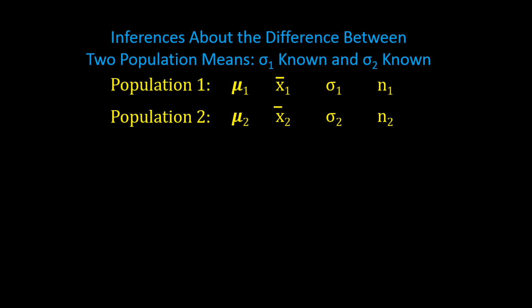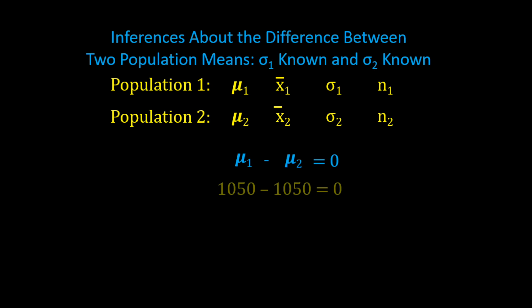What we are interested in is the difference between two population means. In previous tutorials we may have been interested to know if the true mean light bulb burn time was 1,050 hours. Now we want to see if there is a difference between manufacturer 1 (mu 1) and manufacturer 2 (mu 2). If there is no difference, then mu 1 minus mu 2 would be zero — meaning the two brands have the same mean burn time.